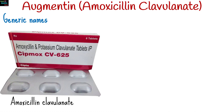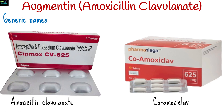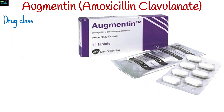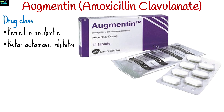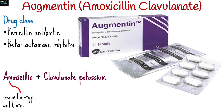Augmentin, known generically as amoxicillin with clavulanate, or co-amoxiclav, is a potent antibiotic medication widely used in the medical field to combat bacterial infections. It belongs to the drug class of penicillin antibiotic or beta-lactamase inhibitor. It combines two active ingredients: amoxicillin, a penicillin-type antibiotic, and clavulanate potassium, a beta-lactamase inhibitor. This combination makes Augmentin effective against a broader spectrum of bacteria compared to amoxicillin alone.